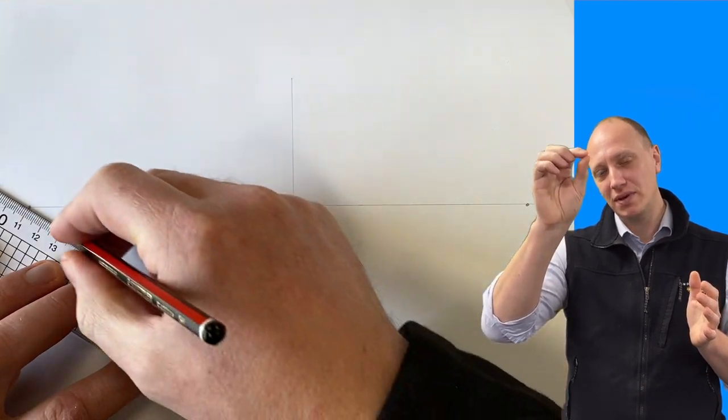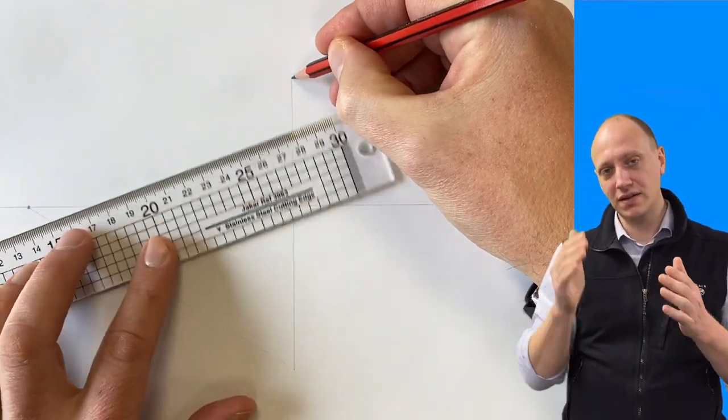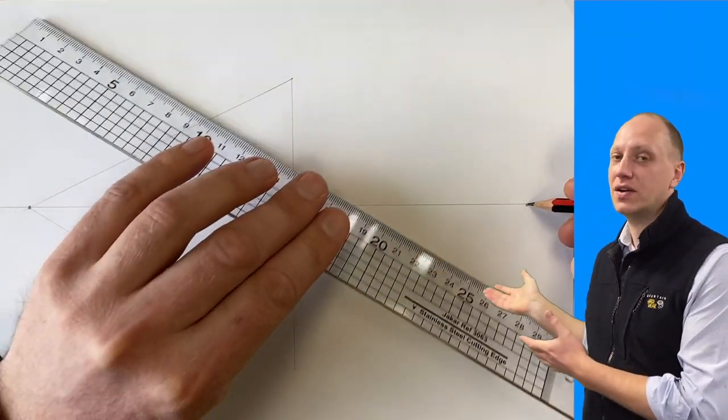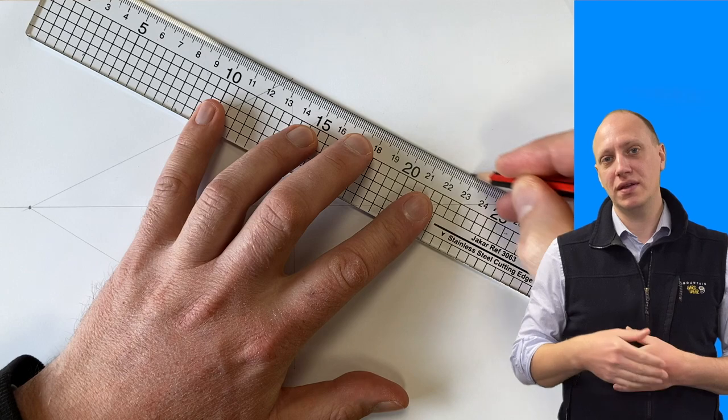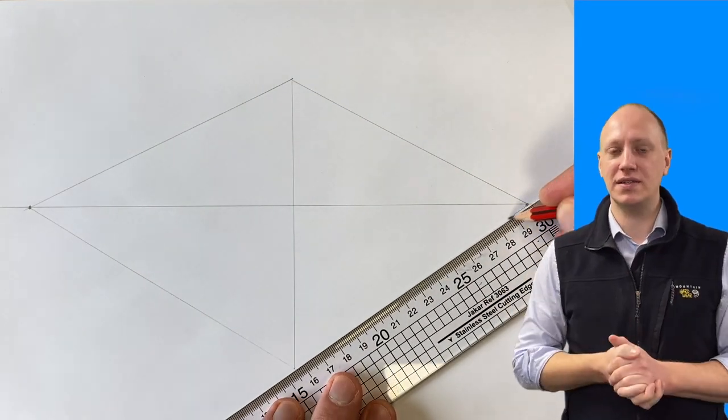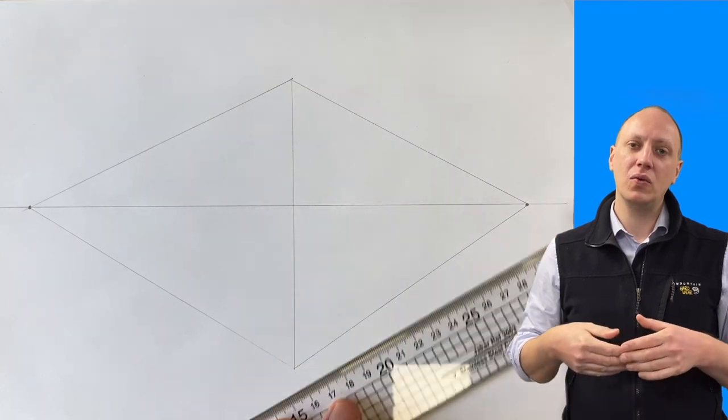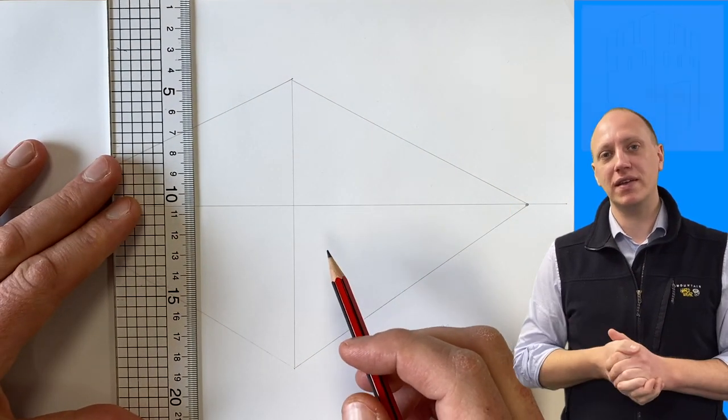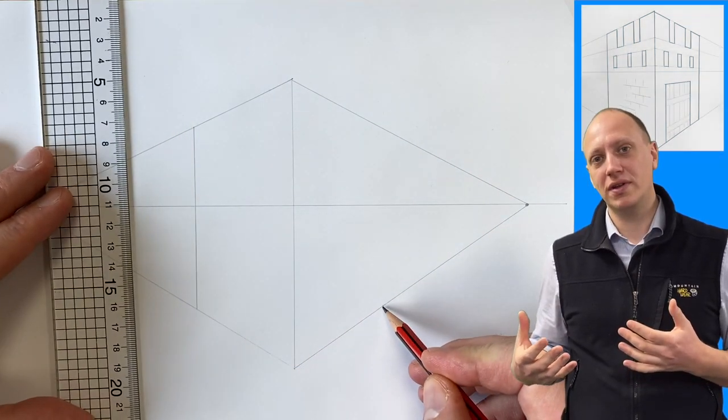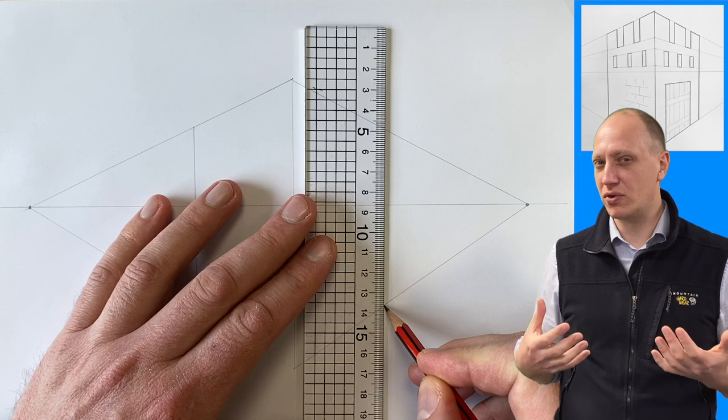We can then take the top and bottom of that line to both vanishing points. So take a look here. This is what you should end up with. A big line in the middle and then the top and bottom taken to each side. We can then put in two more vertical lines, one on the left, one on the right, to make sure that you've got the edges of your castle drawn. And have a look at the original drawing.